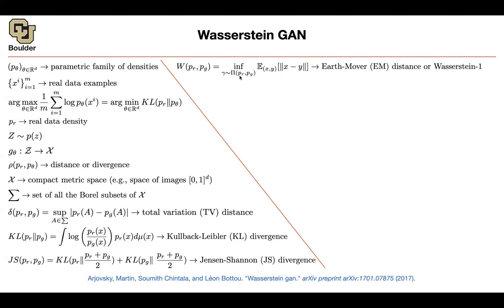You can think of the distributions in terms of a pile of dirt. The distribution PG is another pile of dirt. How much would it cost you to carry the pile of dirt that is real to the pile of dirt that is generated? That's going to give you a distance. The cost depends on the distance between the entries — how much distance you're transferring — times an integral with respect to these probabilities. Basically, how much mass are you transferring?